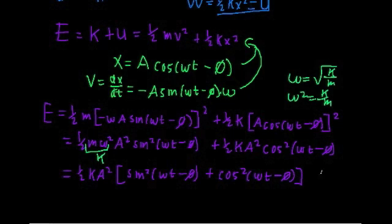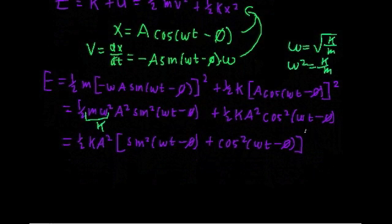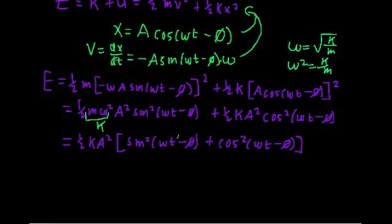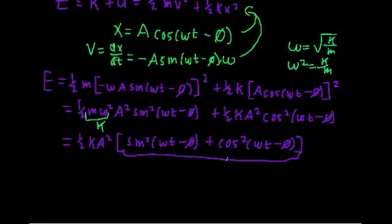Hopefully a red flag should be going up. You should recognize one of the most important trig identities: sine squared of an angle plus cosine squared of an angle equals one. So this whole term is just one, which means the total energy equals one-half k a squared.